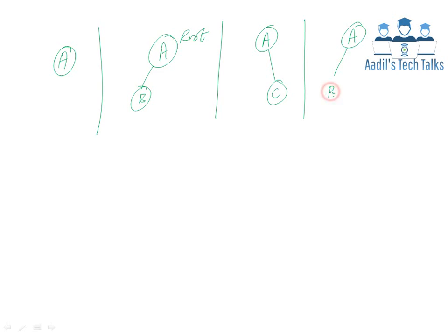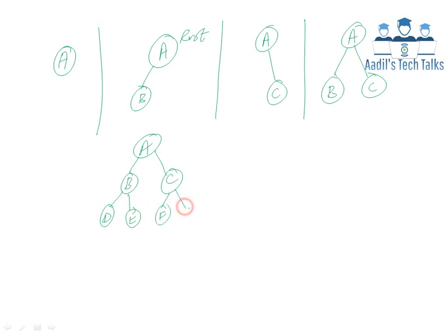Every node of a binary tree is itself a binary tree. So a tree with nodes A, B, C, D, E, F, H, I is a binary tree because no node has more than two children nodes. But as soon as we add another child node — for example, node M — to a node that already has two children, it would no longer be a binary tree.